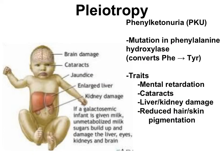Another example of pleiotropy is phenylketonuria, or PKU. PKU is caused by a mutated allele for the phenylalanine hydroxylase gene, which normally converts the amino acid phenylalanine into the amino acid tyrosine. As a result of this one allele, there are many effects on traits, including brain, eye, kidney, and liver damage.